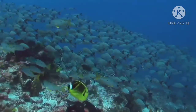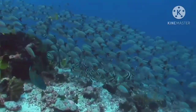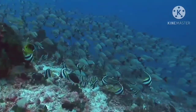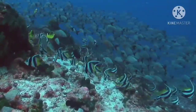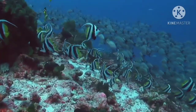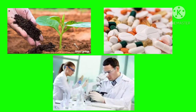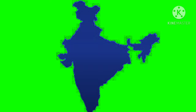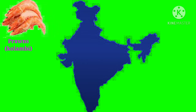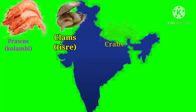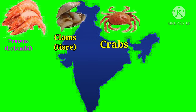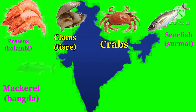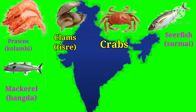Catching marine animals is a large-scale activity the world over. It is one of the ancient occupations of human beings. Though food is the major purpose of this activity, marine animals are also used for the production of fertilizers, pharmaceuticals, and also in research. In India, people mainly consume prawns called columbi, clams called teaser, crabs, and sea fish also called surmai.